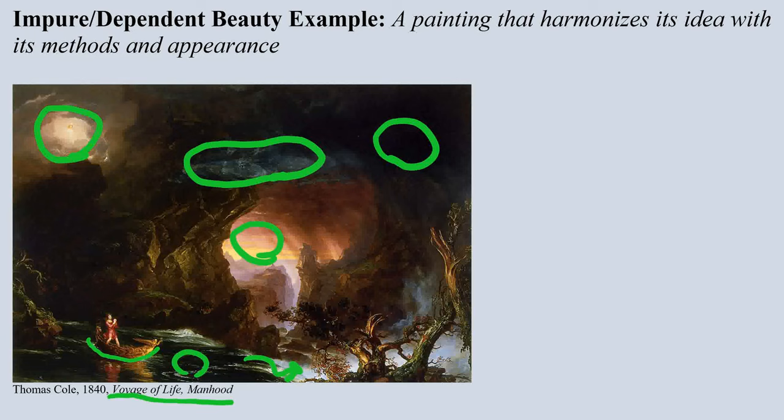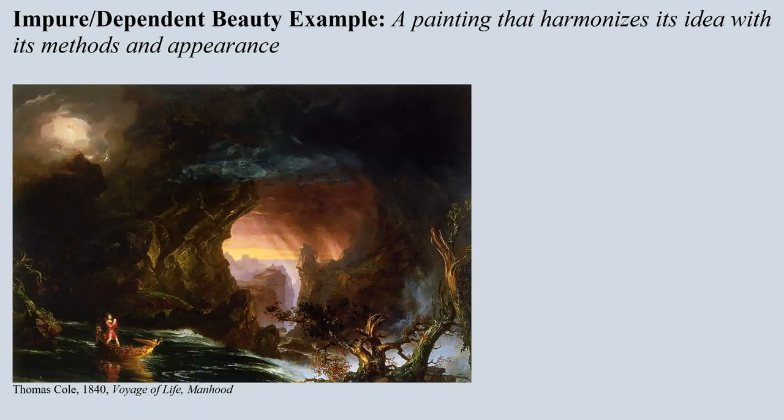So if we found beauty in a work of art like this, Kant would say this is another kind of beauty, but it's not a purely sensory beauty, it's a dependent beauty. It's impure just in that it isn't purely sensory, and this aspect of the beauty comes from harmonizing the idea of the painting with the methods and appearance of the work.